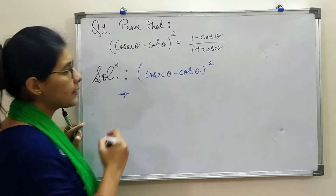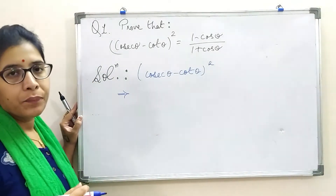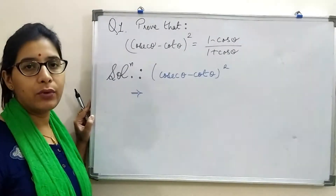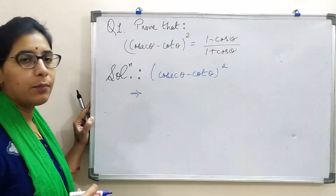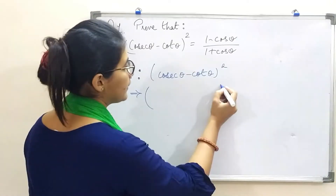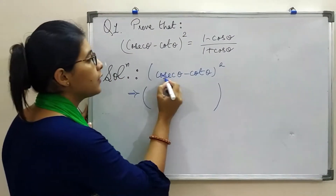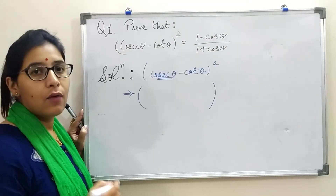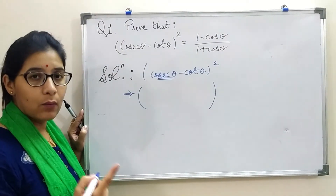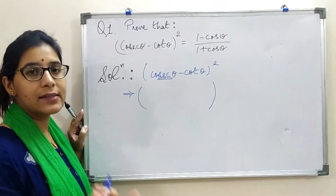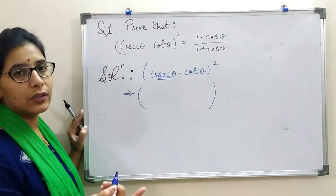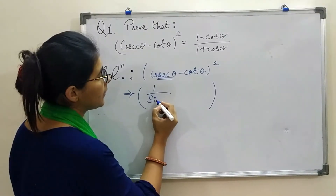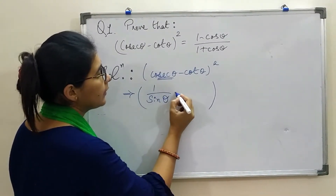In the next step, we will use the formulas from the trigonometric ratio table that we studied earlier. First, we have cosec theta — cosec theta is equal to 1 upon sin theta, because cosec and sin are opposite of each other. So in place of cosec theta, we will substitute 1 upon sin theta.